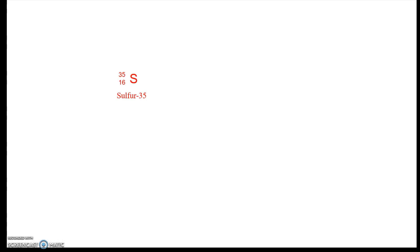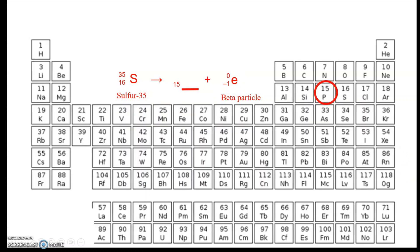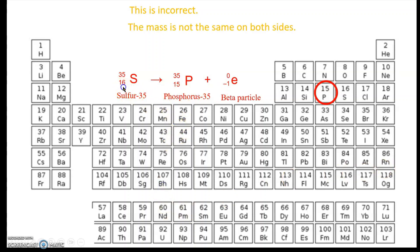Here's a common but incorrect approach using sulfur-35, which is a beta emitter. A common mistake is saying 16 minus 1 equals 15, then looking up element 15 — phosphorus — and writing phosphorus-35. The problem is that 15 minus 1 does not equal 16: the mass is not the same on both sides. You always have to check, especially with beta emitters, that your numbers balance on both sides of the equation.